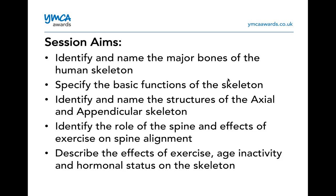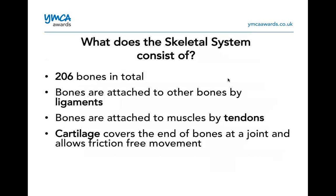You should know there are 206 bones in total. It's really important to remember that bones are attached to other bones by ligaments, and bones are attached to muscles by tendons. We have cartilage that covers the ends of each bone at a joint and allows friction-free movement.